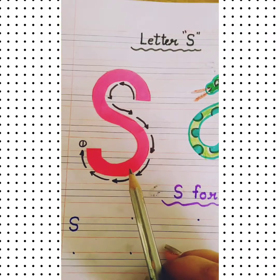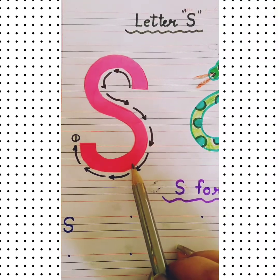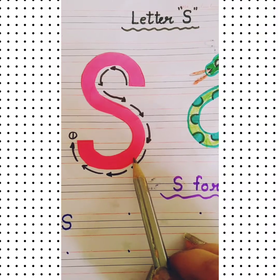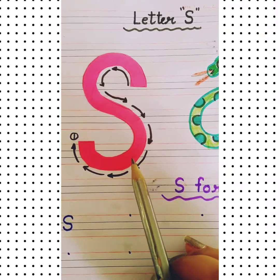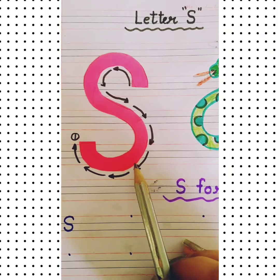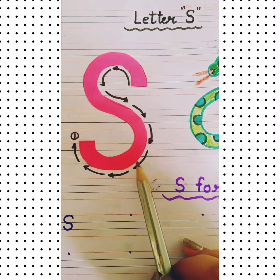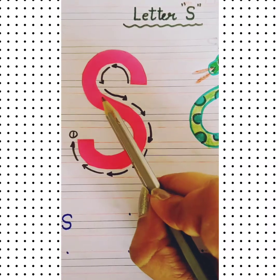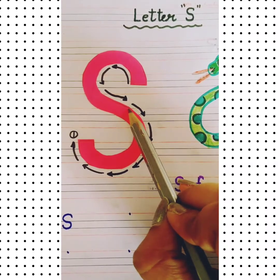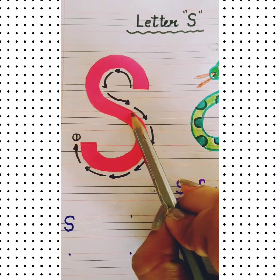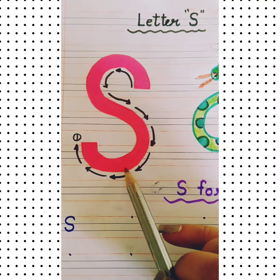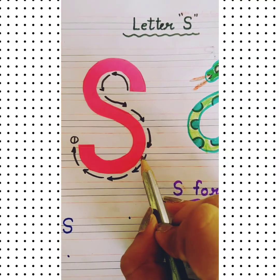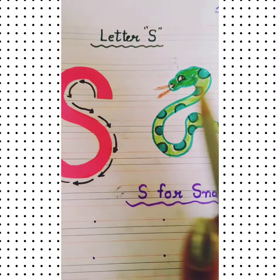Now look here kids — which letter is this? This is letter S. Which letter is this? This is letter S. Now look, what is the formation of letter S? First you have to make a left curve, okay, then stop here, then you have to make a right curve. Like this you have to make letter S.